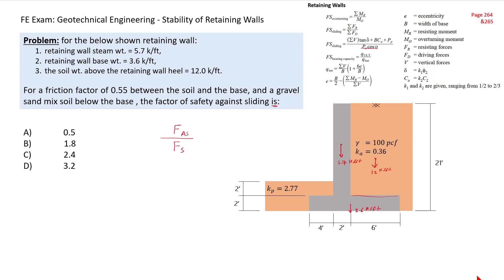You can find it here — this is your pressure distribution. The maximum pressure is ka·γ multiplied by h. Be careful: you need to take the height from the top until the bottom, including the base thickness. Pa equals the area of the triangle multiplied by one linear foot, so it's one-half·ka·γ·h·h, which gives one-half·ka·γ·h².